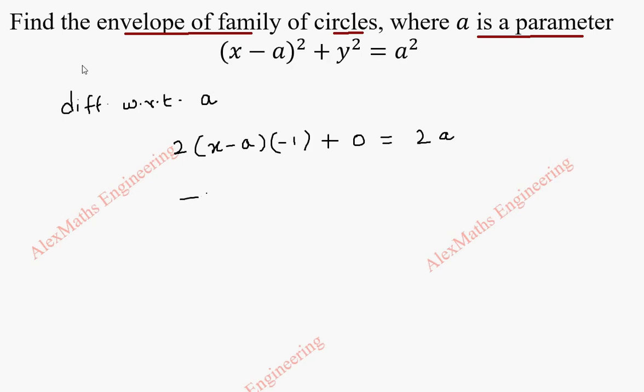Now, this is -2(x - a) = 2a. We have to find a from this.